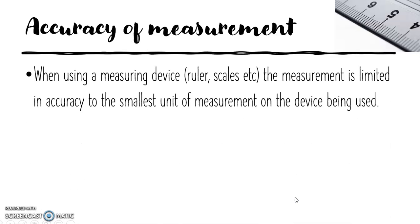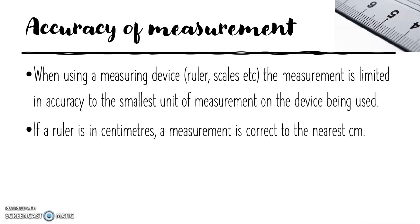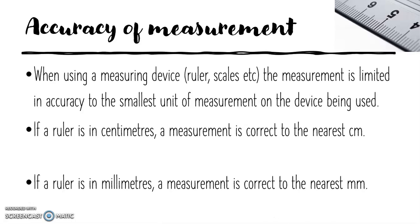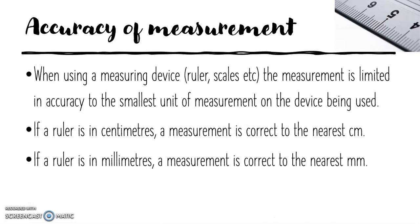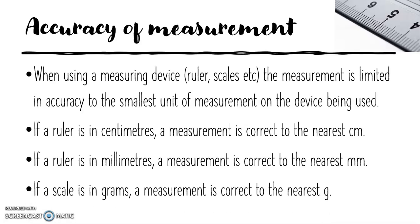For accuracy of measurement when using a measuring device such as a ruler or scales, the measurement is limited in accuracy to the smallest unit of measurement on the device being used. If a ruler is in centimetres, a measurement is correct to the nearest centimetre. If a ruler is in millimetres, a measurement is correct to the nearest millimetre. If a scale is in grams, a measurement is correct to the nearest gram.